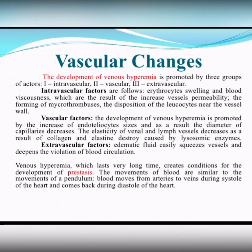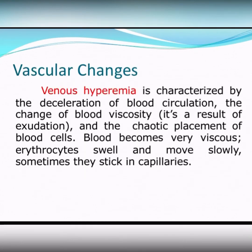Venous hyperemia, which lasts a very long time, creates conditions for the development of near-stasis states, pre-stasis. The movements of blood are similar to the movements of a pendulum — blood moves from arteries to veins during systole of the heart and comes back during diastole. These pre-stasis states lead to stasis in the vascular changes.